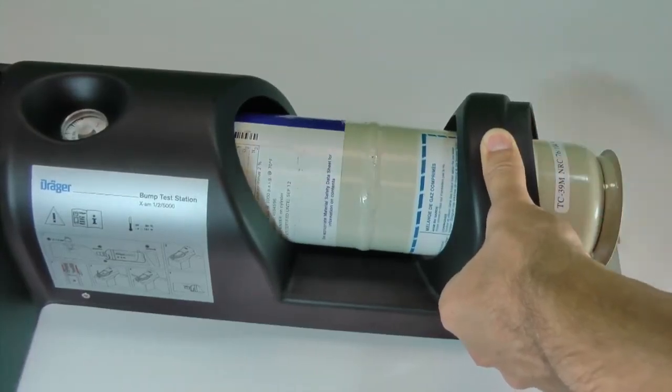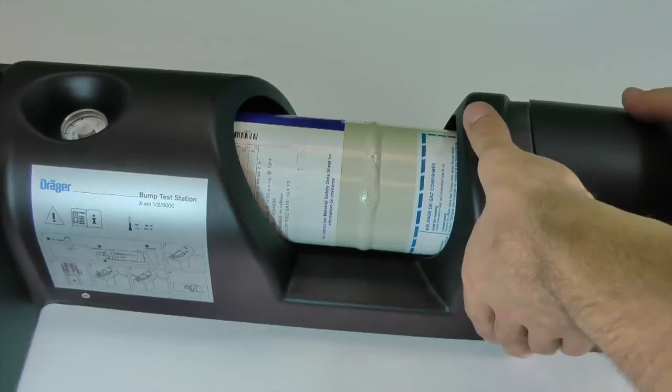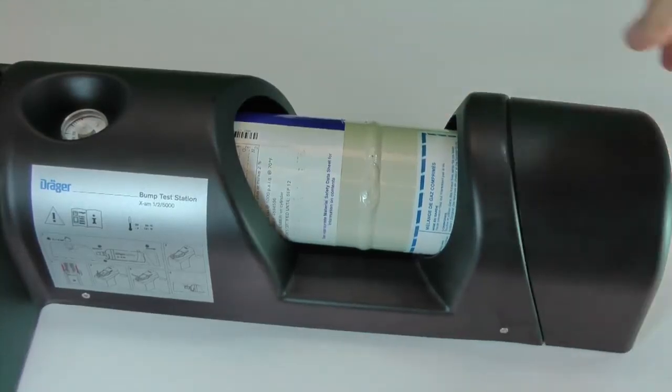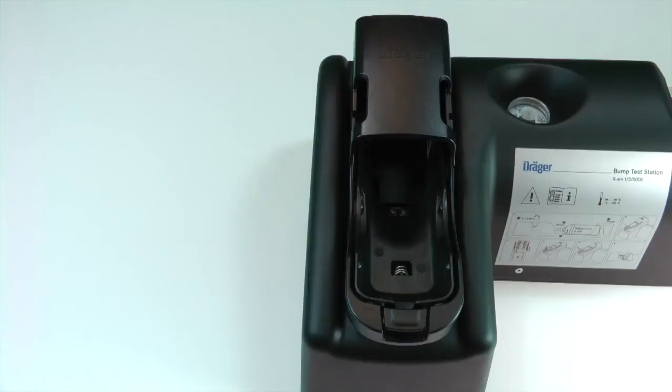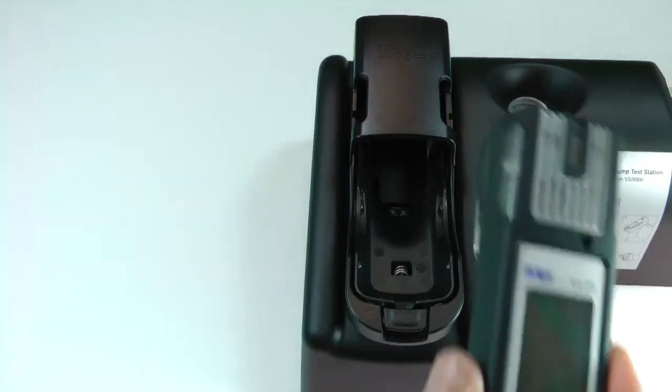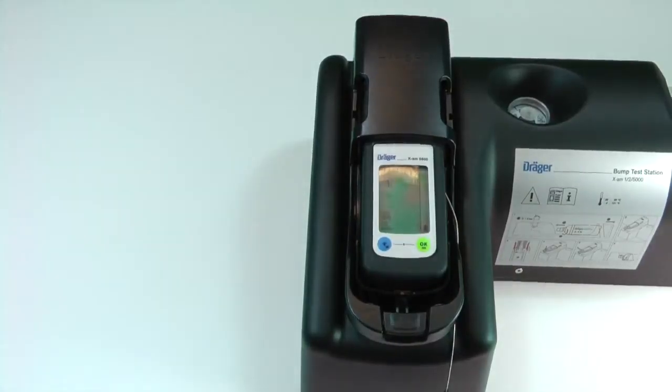Replace the bump test cap once the cylinder is inserted. To perform an automatic bump test, insert the instrument into the cradle. Be sure to push the instrument all the way into the cradle until a click is heard.